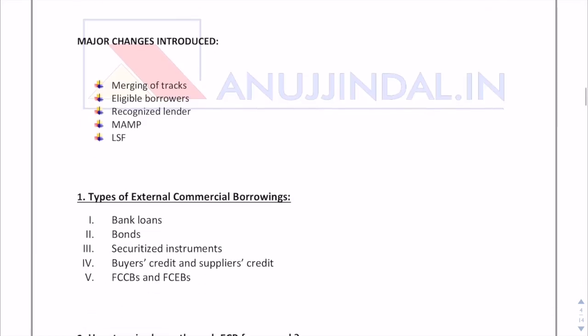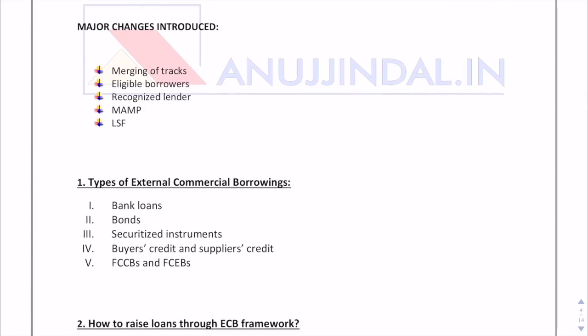Now we will focus upon the major changes introduced in December 2018. There are five major changes regarding: merging of tracks, eligible borrowers, recognized lenders, MAMP, and LSF. I will be discussing all of these in this video in brief.